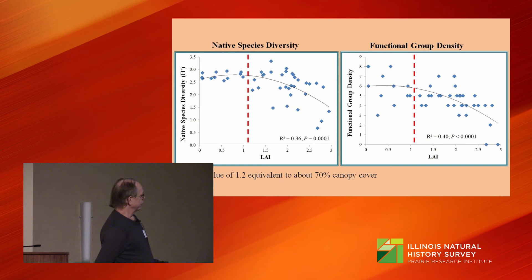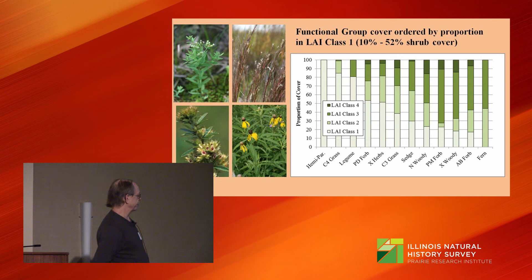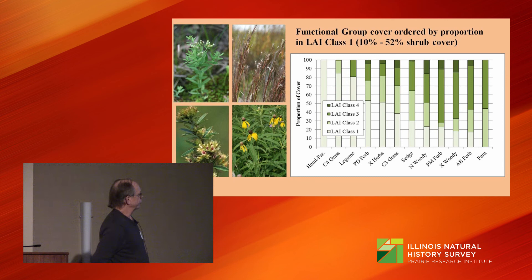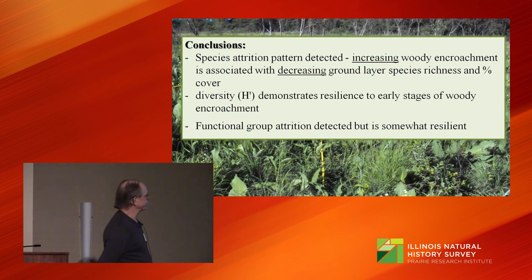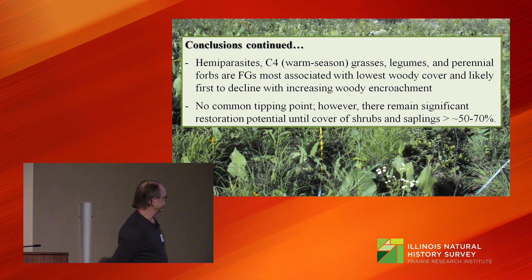When we look at functional groups and their distribution according to available light, the groups most affiliated with the most open parts of the stand are hemiparasites, warm season grasses, legumes, and perennial forbs. In conclusion, a species attrition pattern was detected. Diversity and functional group density demonstrate some resilience to early stages of woody encroachment. Hemiparasites, warm season grasses, legumes, and perennial forbs are the functional groups most associated with the lowest woody cover and are likely the first to decline with increasing encroachment. While there's no common tipping point, there remains significant restoration potential until the cover of shrubs and saplings exceeds 50 to 70%.